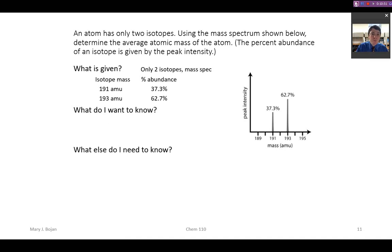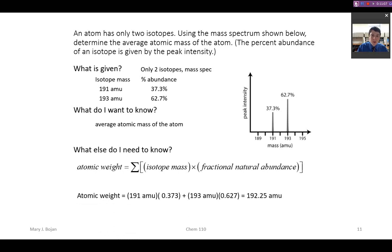What do we want to know? We want to know the average atomic mass of the atom. So what do we need to solve this? This is where we're going to need the relationship between the average atomic weight and the isotopic masses and the fractional abundances. We can then plug in those values. Make sure that you're converting from percentage to a fractional value and then solve. And we would get for that 192.25 amu.